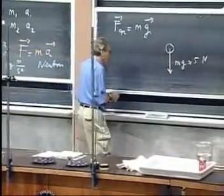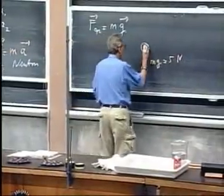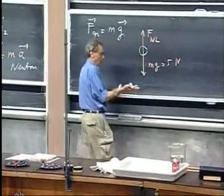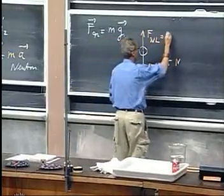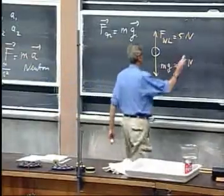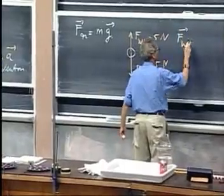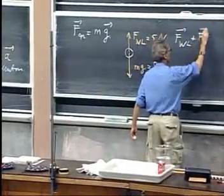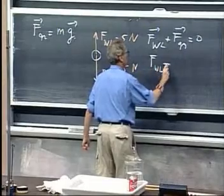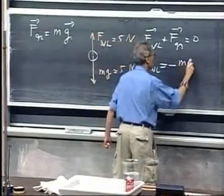But the net force is zero. Therefore, it is very clear that I, Walter Lewin, must push up with a force from my hand onto the ball of about, of course, exactly the same five newtons. Only now there is no acceleration. So I can write down that the force of Walter Lewin plus the force of gravity equals zero.